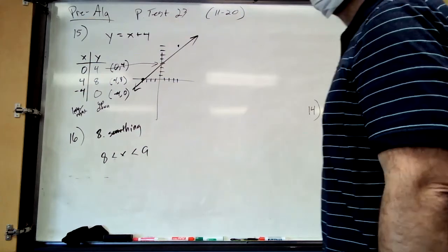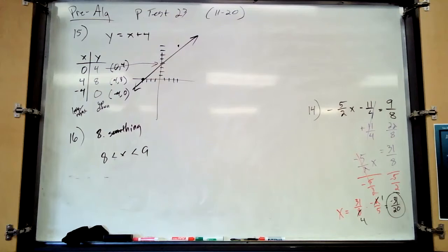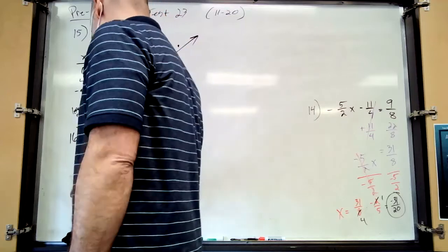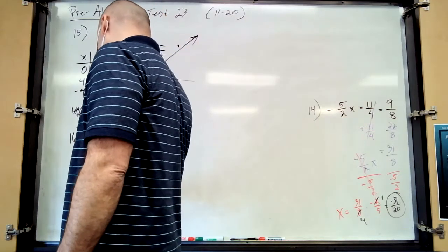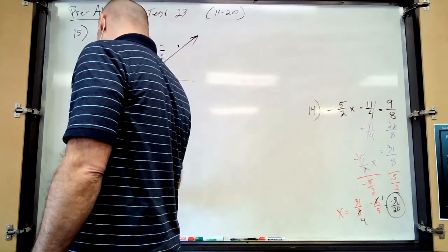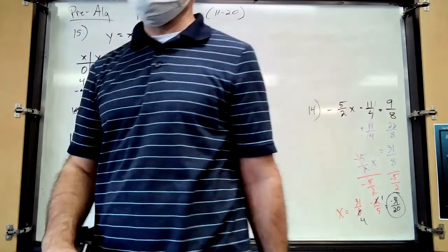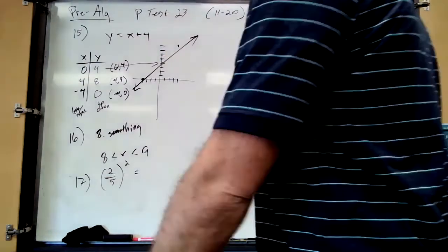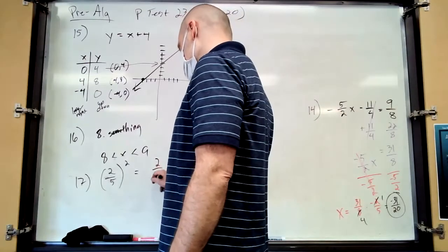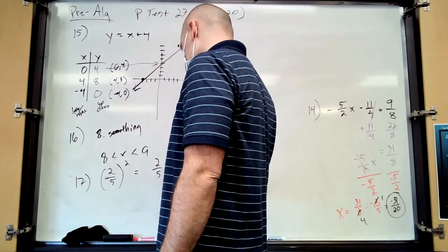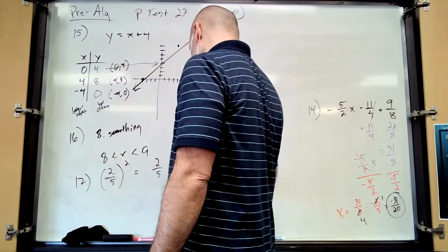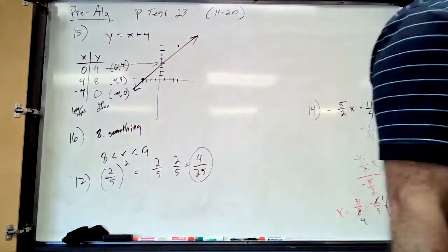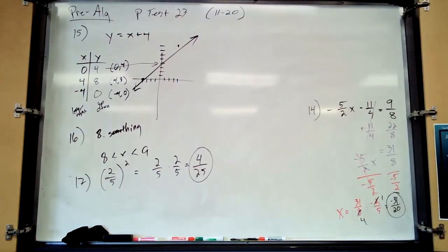Number 17: can you do this in your head? It's two-fifths squared, so that's two-fifths times another two-fifths, which equals four twenty-fifths. Don't say four-tenths — it's four twenty-fifths.